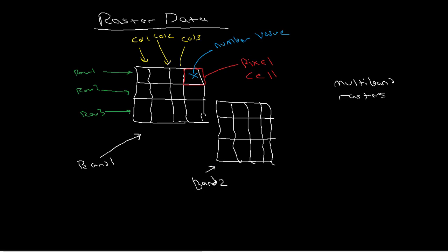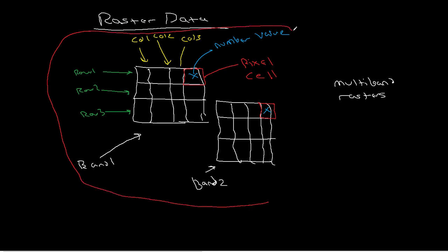Band two would also be arranged in rows and columns, built up of pixels containing values. The critical thing here is that both bands together form one image. This pixel in band one and this pixel in band two are on top of each other — they correspond to the same location. So it's more useful to think of this as a cube with three dimensions.